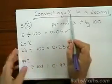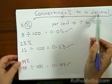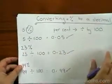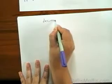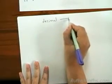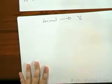Okay, that was converting a percentage to a decimal. Now let's have a look at doing the opposite. Let's convert a decimal into a percentage.